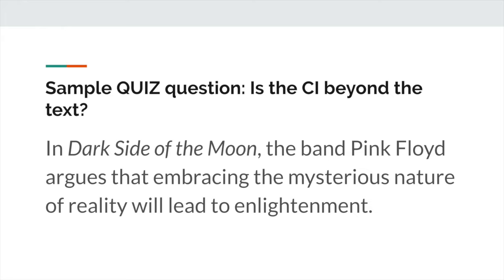Let's go to our third standard: narrow and specific. Ironically enough, this standard about being narrow and specific is the vaguest. It's harder to define in a binary way like the other ones, but let's try. Narrow and specific is all about avoiding unnecessary vagueness. A good way to test that is to see whether the reader has to ask a question to understand the CI. Oftentimes, writers — especially high school students — will leave their CI so vague that it's not at all clear what you're arguing. So let's take a look at some examples to see what I mean.